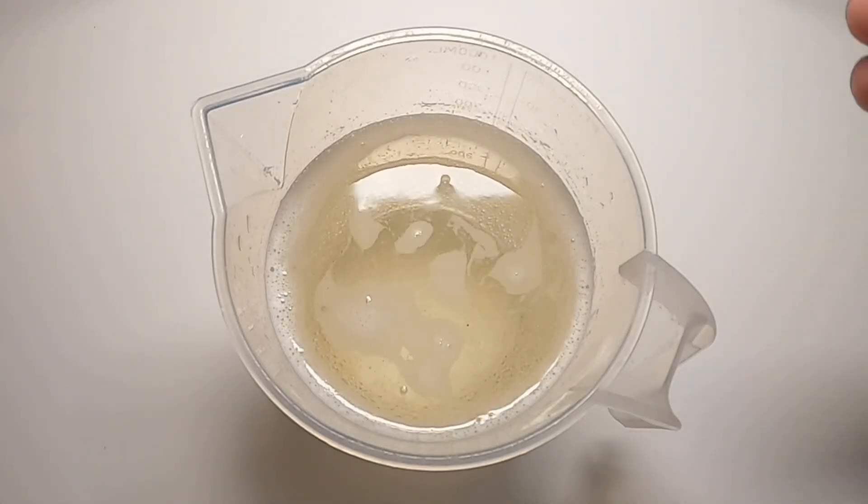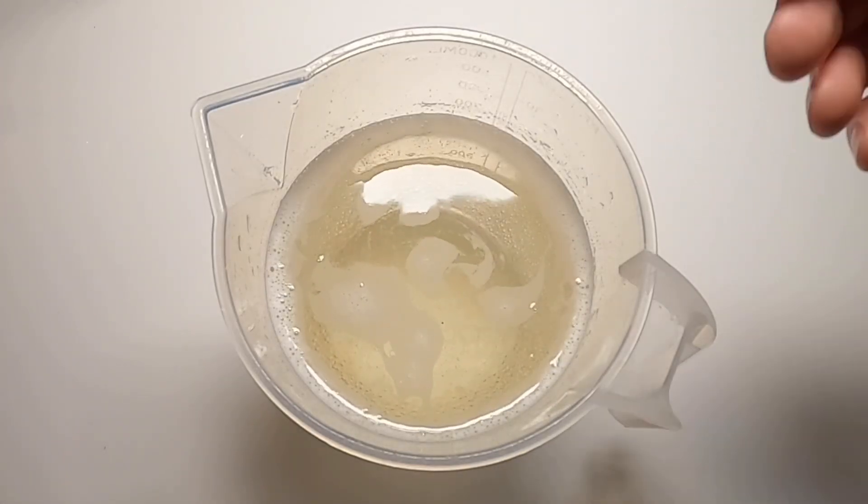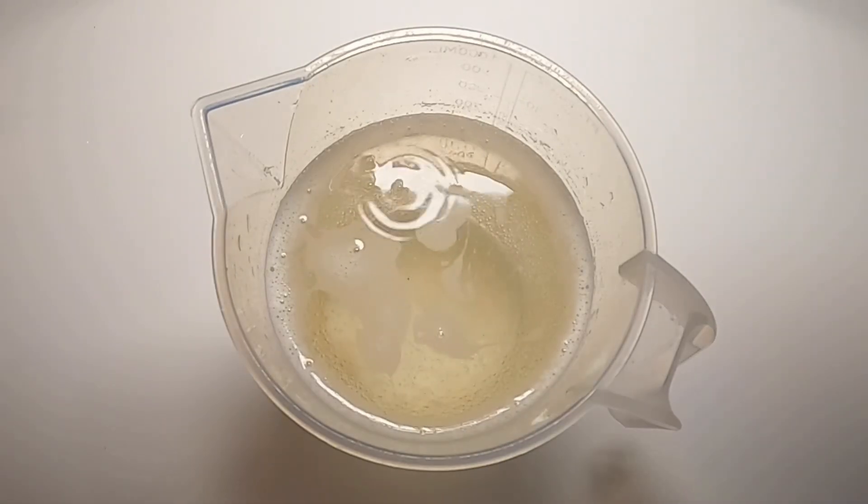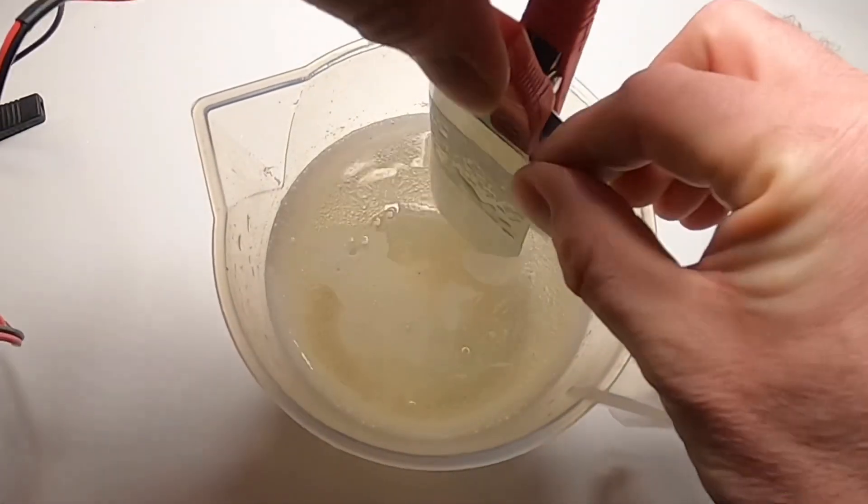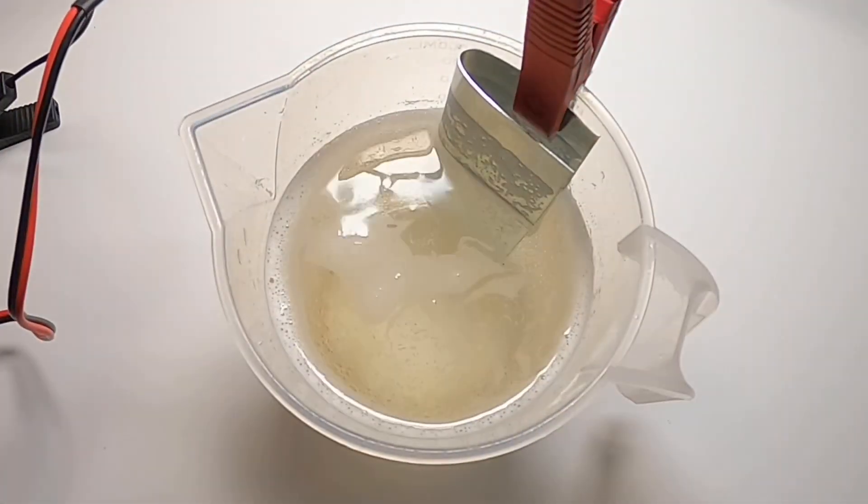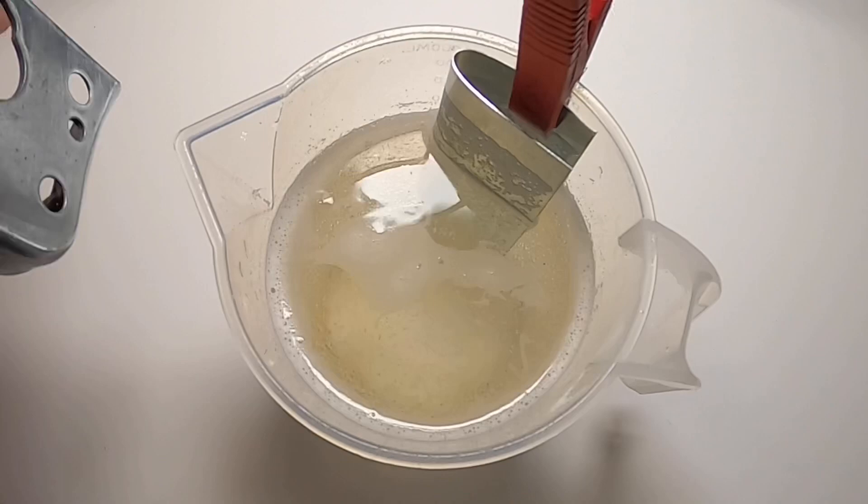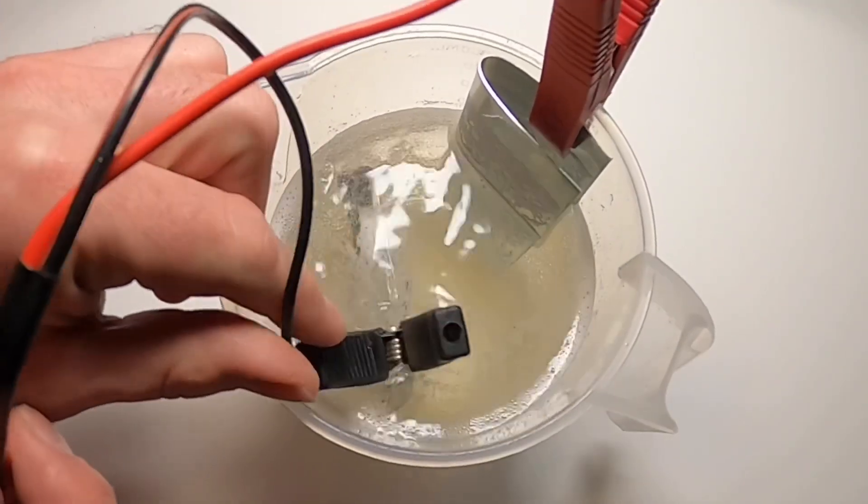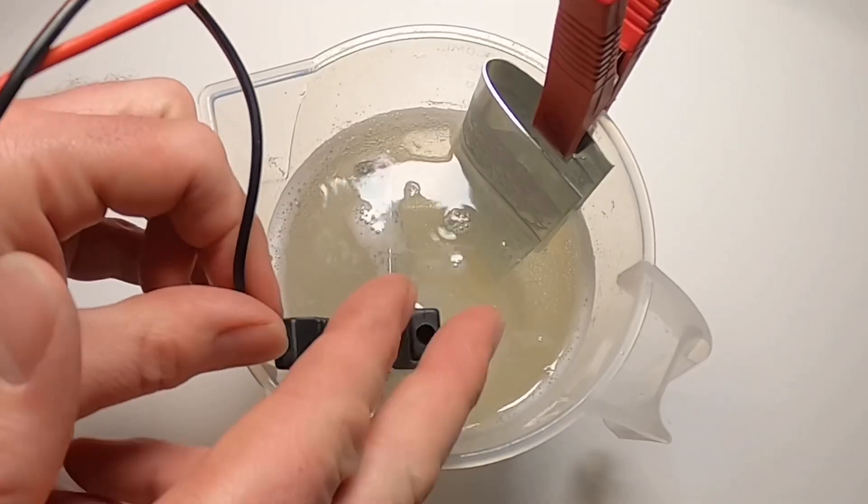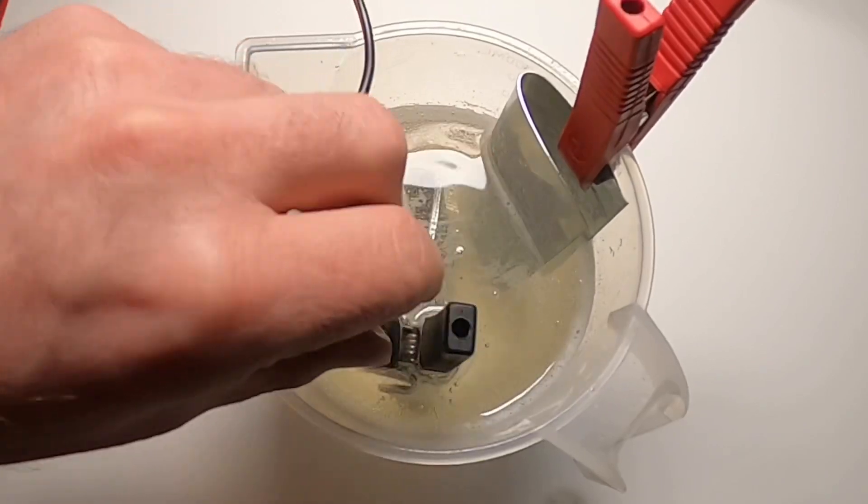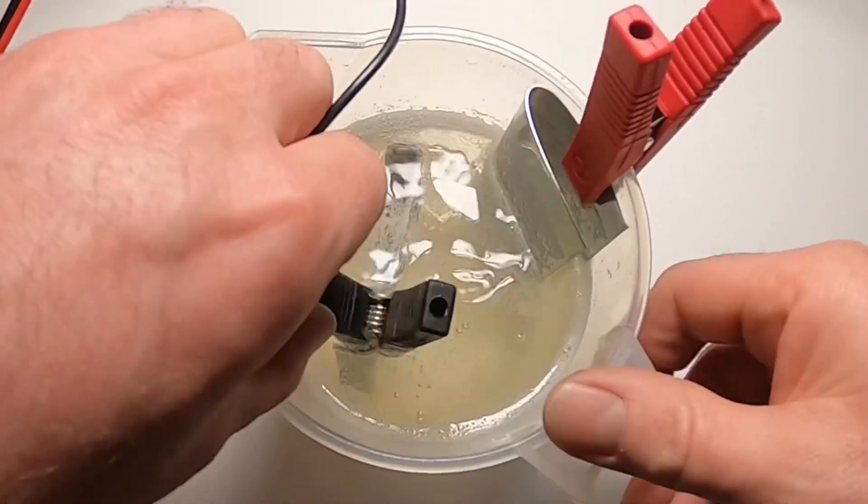In front of us is the electrolyte solution with the vinegar, the water and the bicarbonate soda. I'm now going to put in the zinc anode and submerge it the best I can to the bottom. And now the piece that I want to zinc plate, that's nicely submerged in the bottom. Make sure the two pieces do not touch each other during the process.